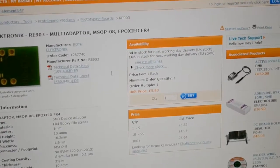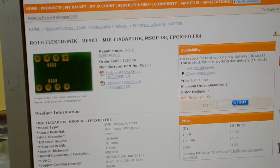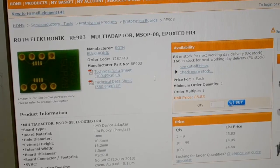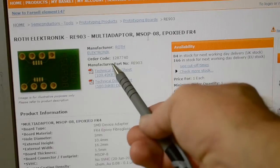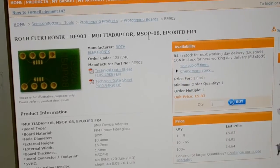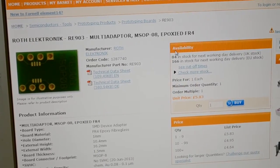Let me zoom you in. So there's the order code, 1287740, five pound 83 plus VAT.